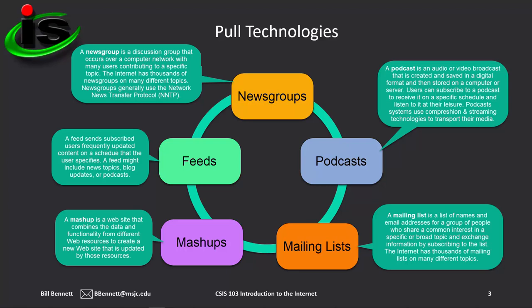Some communication methods are both push and pull depending on who is using them. For example, the person who writes a blog is pushing content to other users, who can then decide whether they want to pull it to their devices. There are also methods that don't fit neatly into these categories — they are based on the technology used to disseminate information or the way information is combined. On your screen, you see the group of pull technologies: news groups, feeds, mashups, mailing lists, and podcasts.